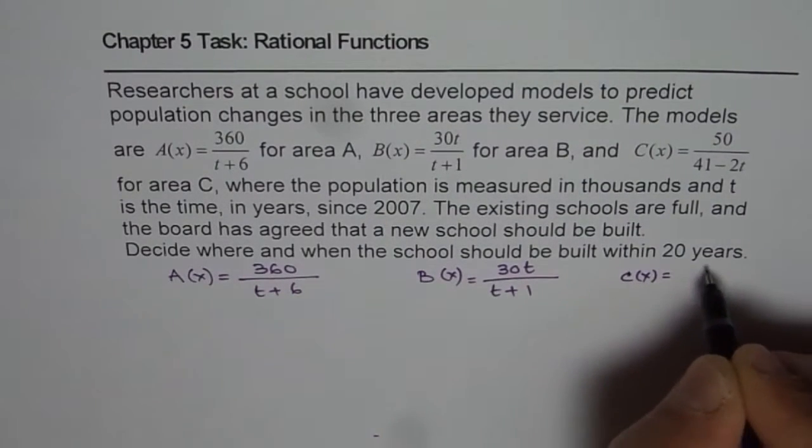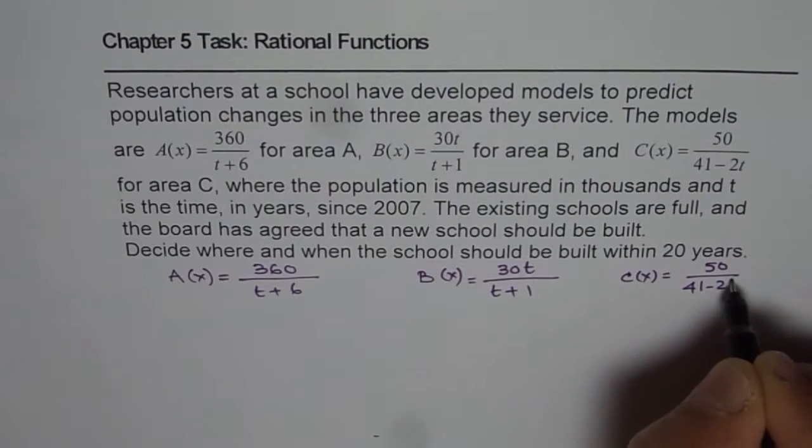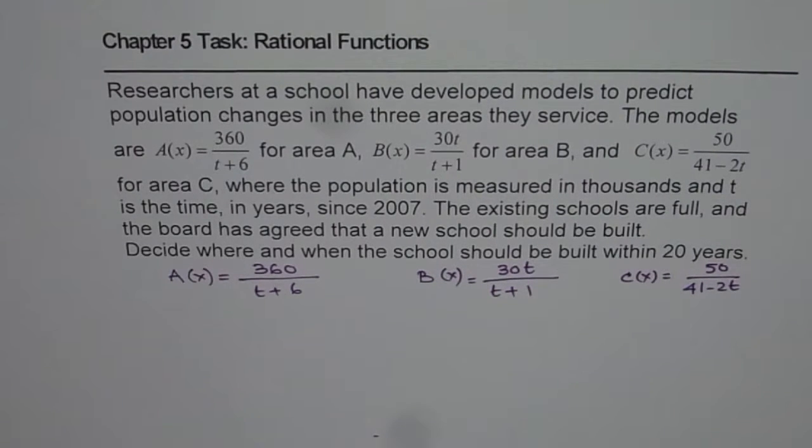So 360 over t plus 6, B(x) equals to 50 over 41 minus 2t. I will appreciate if you could draw the graph for these functions as I am drawing or you can pause the video, draw it and then look into my suggestions.